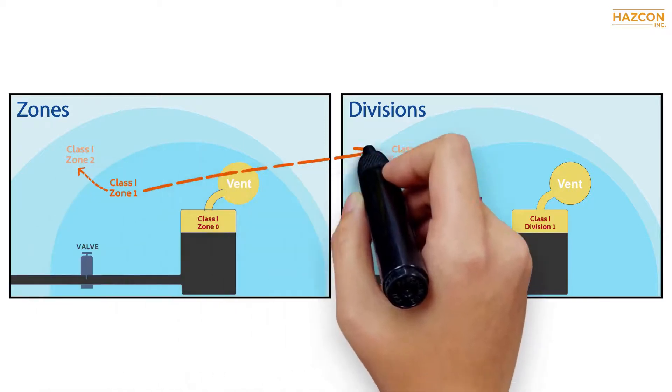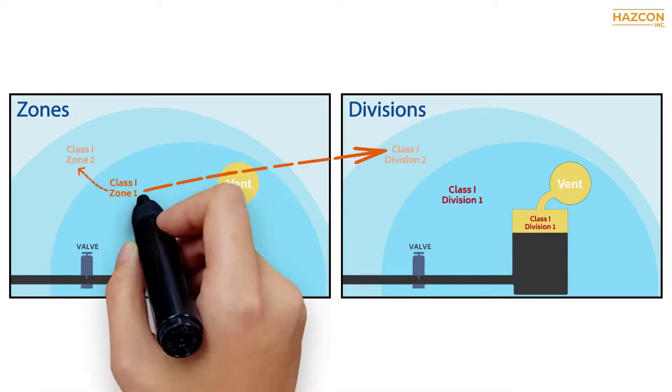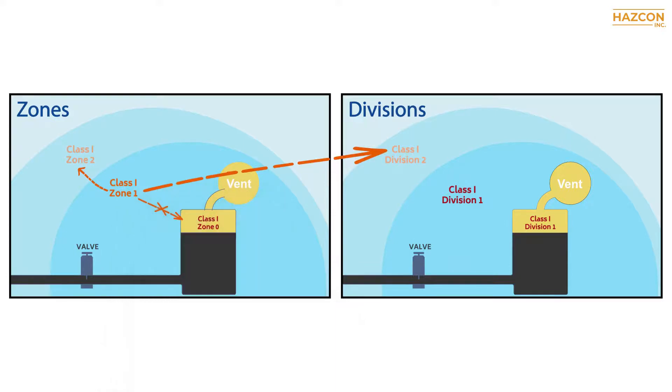Zone 1 products may be installed in zone 2 and Division 2 only. Please note that zone 1 products may not be installed in zone 0 or class 1 Division 1.